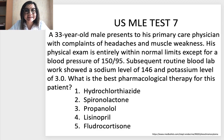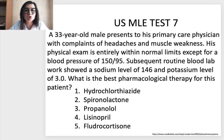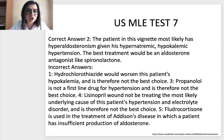Test 7. A 33-year-old male presents to his primary care physician with complaints of headaches and muscle weakness. Physical exam is entirely within normal limits except for a blood pressure of 150/95. Blood lab work showed a sodium level of 146 and potassium level of 3.0. What is the best pharmacological therapy for this patient? The correct answer is option 2. The patient most likely has hyperaldosteronism given his hypernatremic, hypokalemic hypertension. The best treatment would be an aldosterone antagonist like spironolactone.